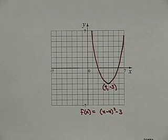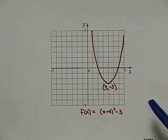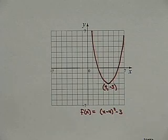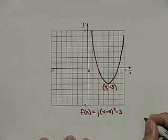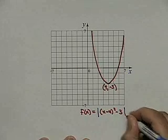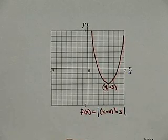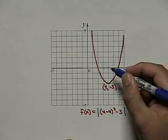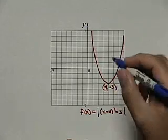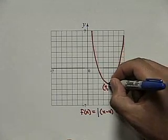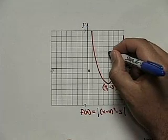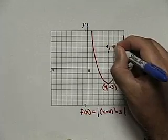Here you see the graph of f of x equals x minus 4 squared minus 3 already drawn for us. Notice that it's a parabola with a vertex located at the point 4, negative 3. We've been asked to draw f of x equals the absolute value of x minus 4 quantity squared minus 3. We need to find all the values below the x-axis and reflect them above the x-axis. So, for instance, the value 4, negative 3 will keep the same x value 4, but the negative 3 will reflect above the x-axis and become positive 3, so that point will end up at 4, positive 3.